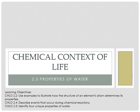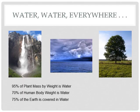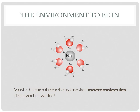Here we are in the third part of this series about the chemical context of life, and we're talking about water. Lots and lots of water, because water is essential to survival on Earth. Water is everywhere. 95% of plant mass by weight is water — what you're looking at when you look at a plant is basically a whole bunch of water and a little thin layer surrounding it. 70% of you is water. 75% of the Earth's surface is covered in water.